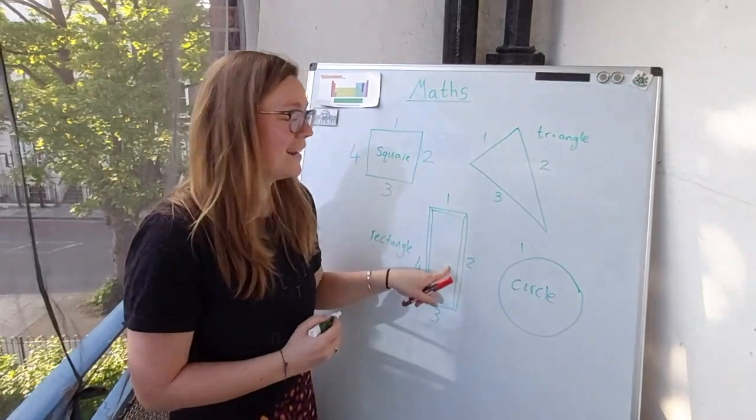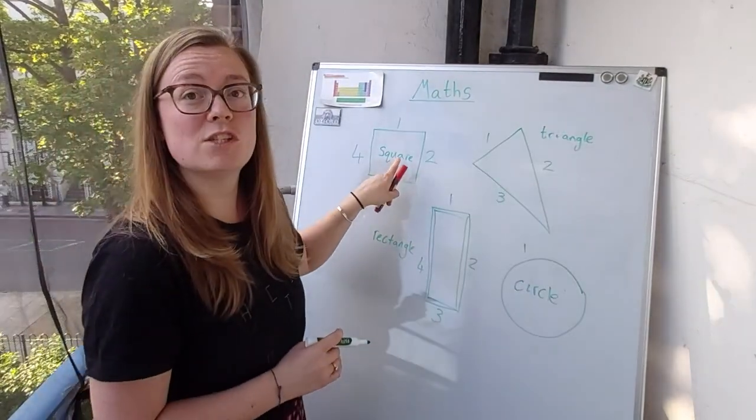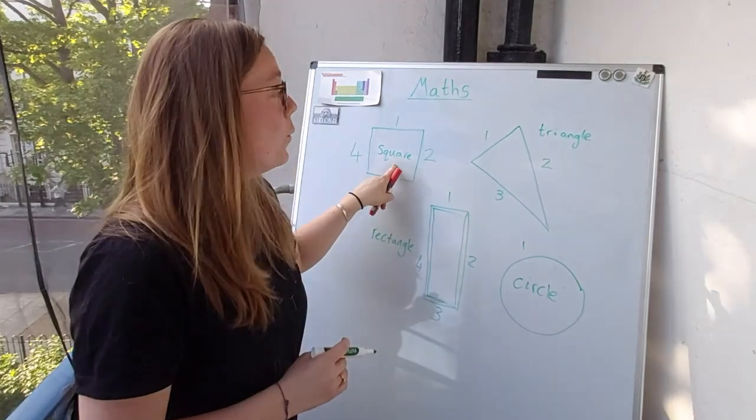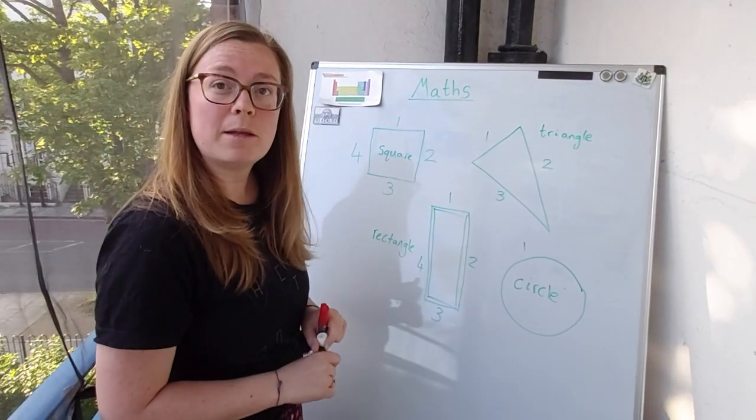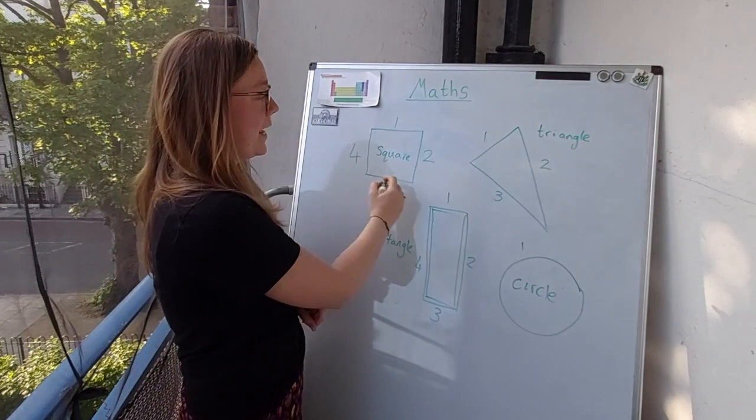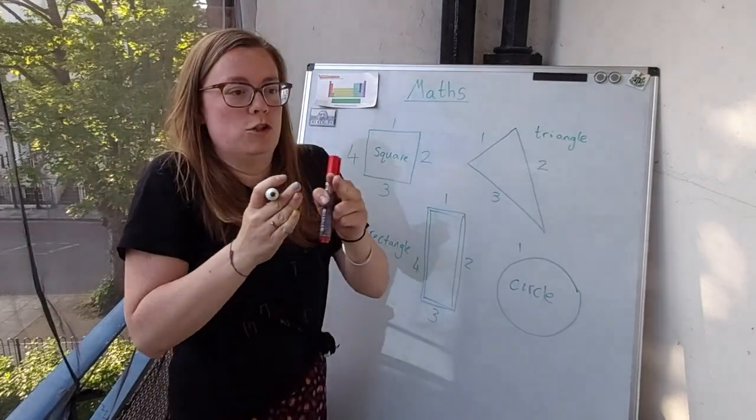And that's what makes this shape a rectangle. That's what makes a rectangle different from a square. A square's sides are all the same length. They're all the same. But a rectangle is long.